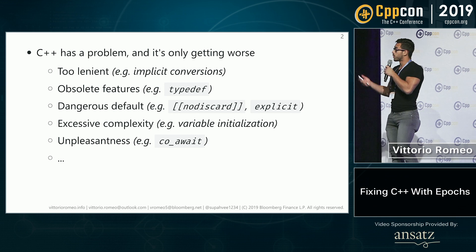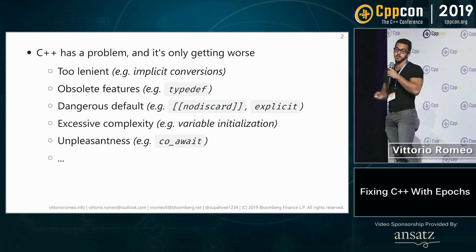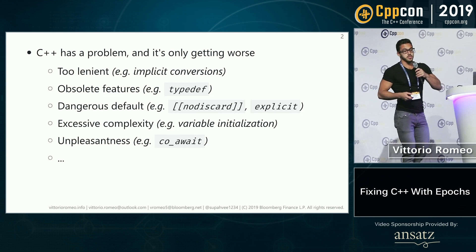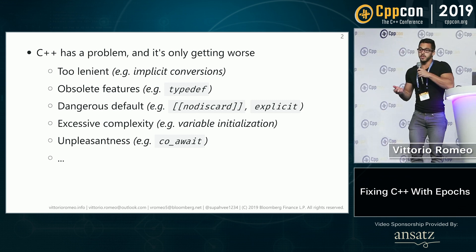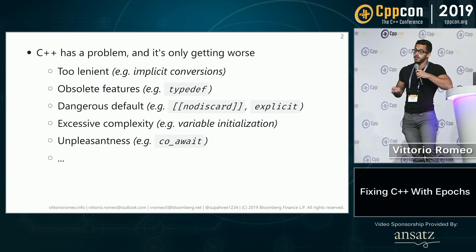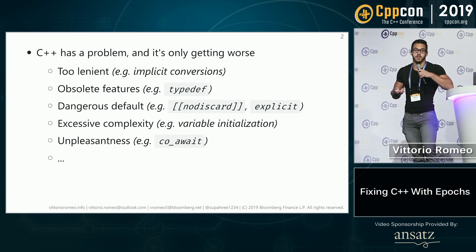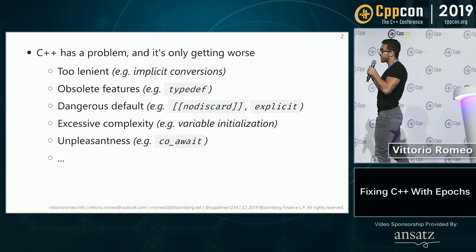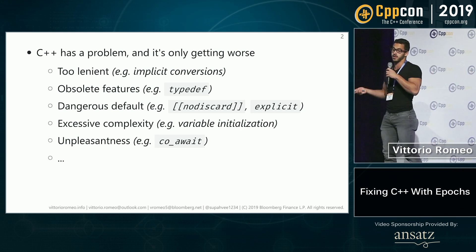The language is too lenient. For example, we allow things like implicit conversions. We have some obsolete features, like typedef — now we have using, which is better. We have some dangerous defaults. Things should be non-copyable by default and explicit by default. And we have excessive complexity for stuff like variable initialization, and unpleasant keywords like co_await.